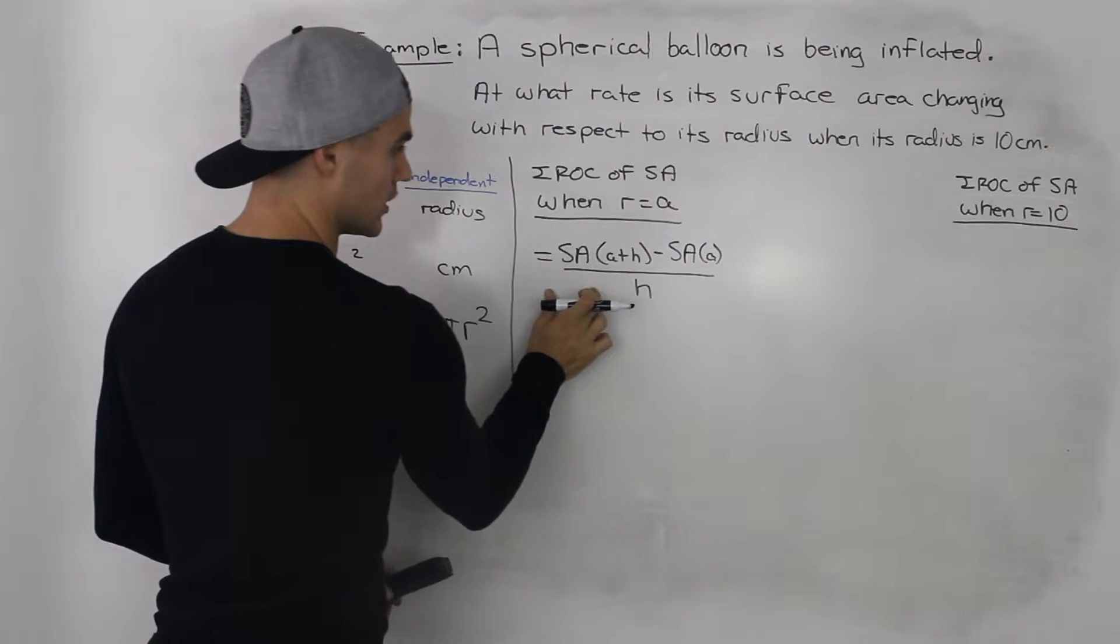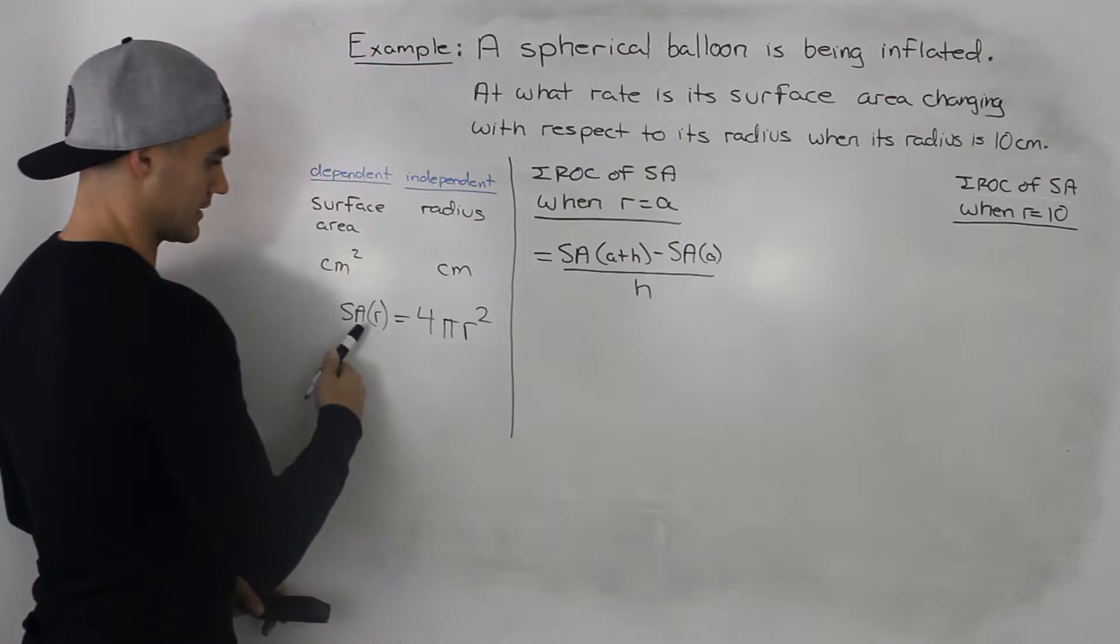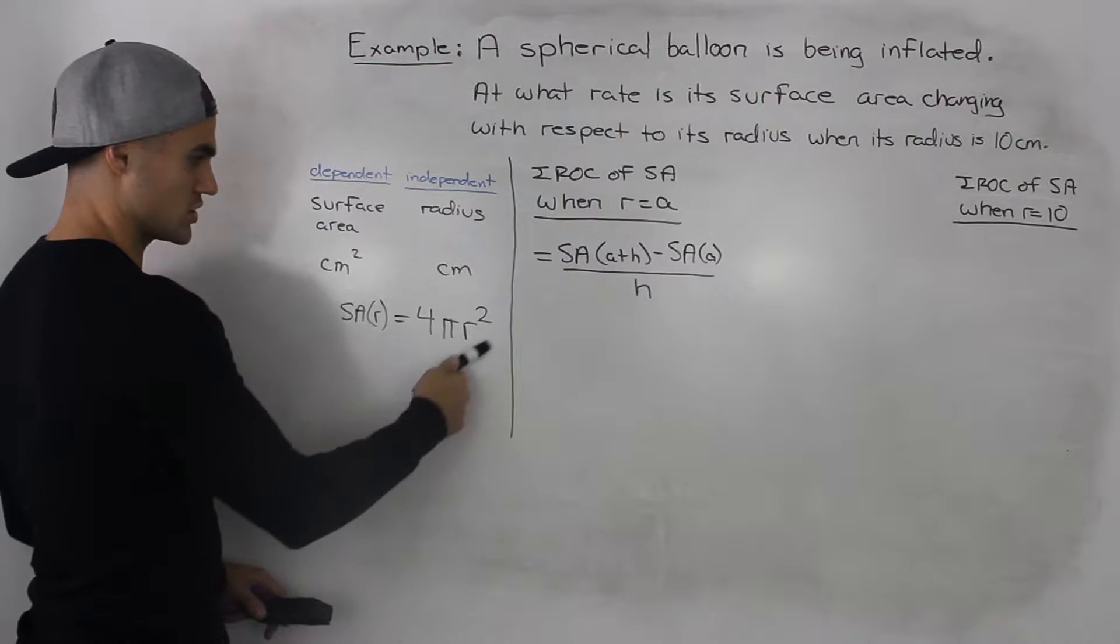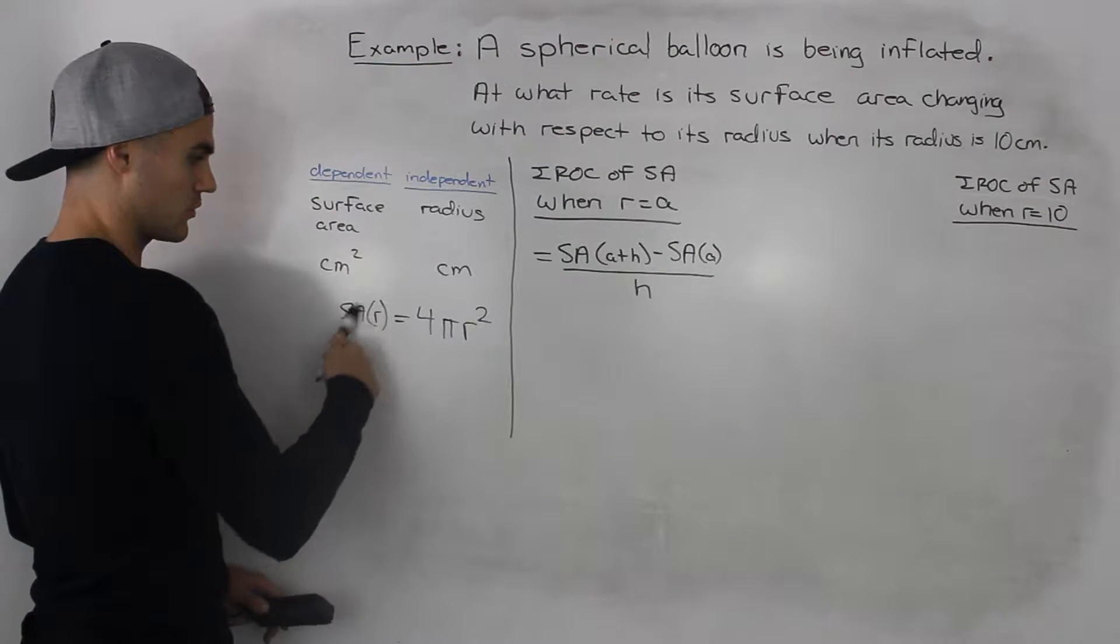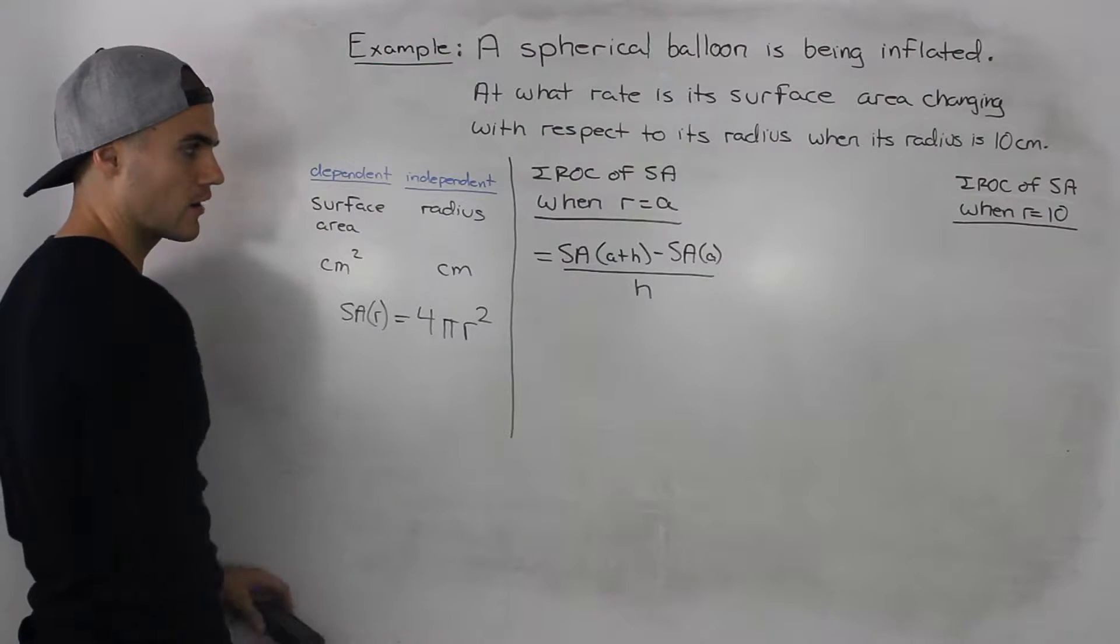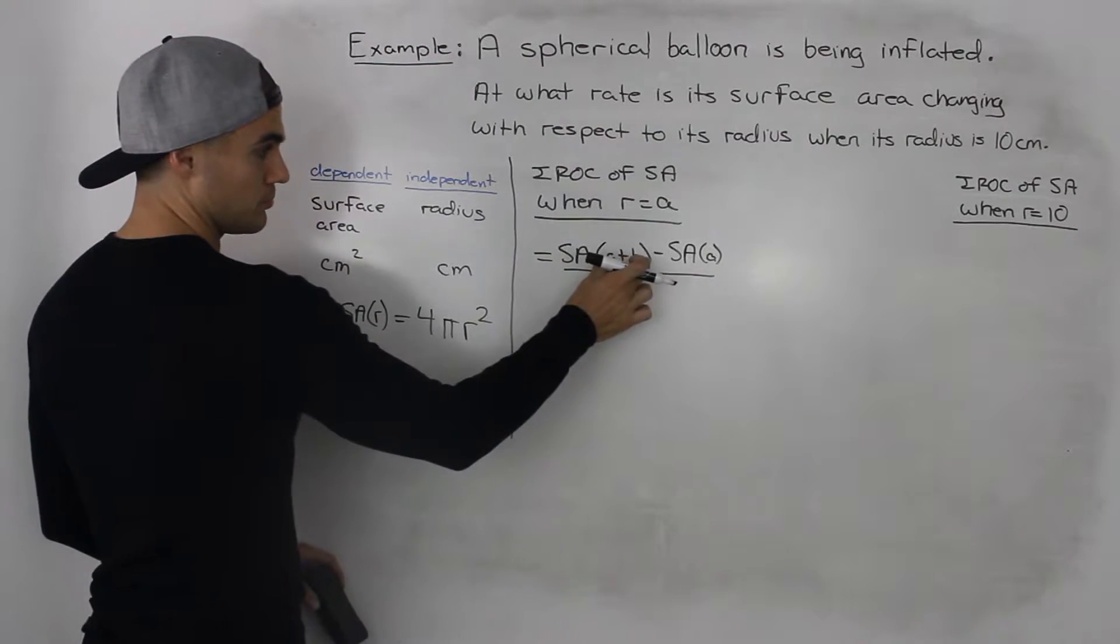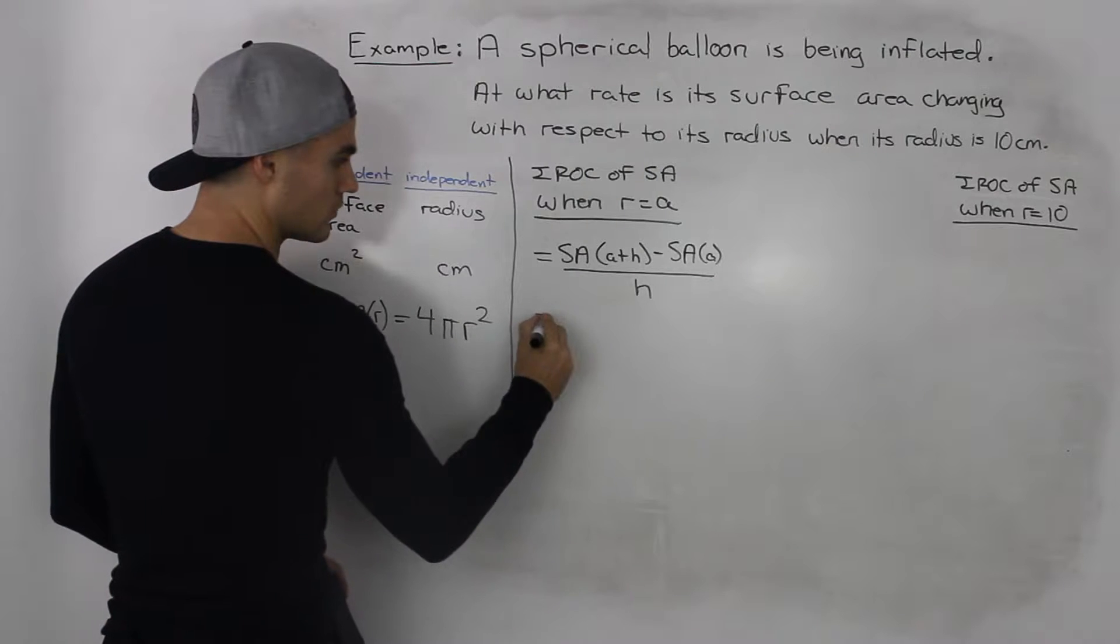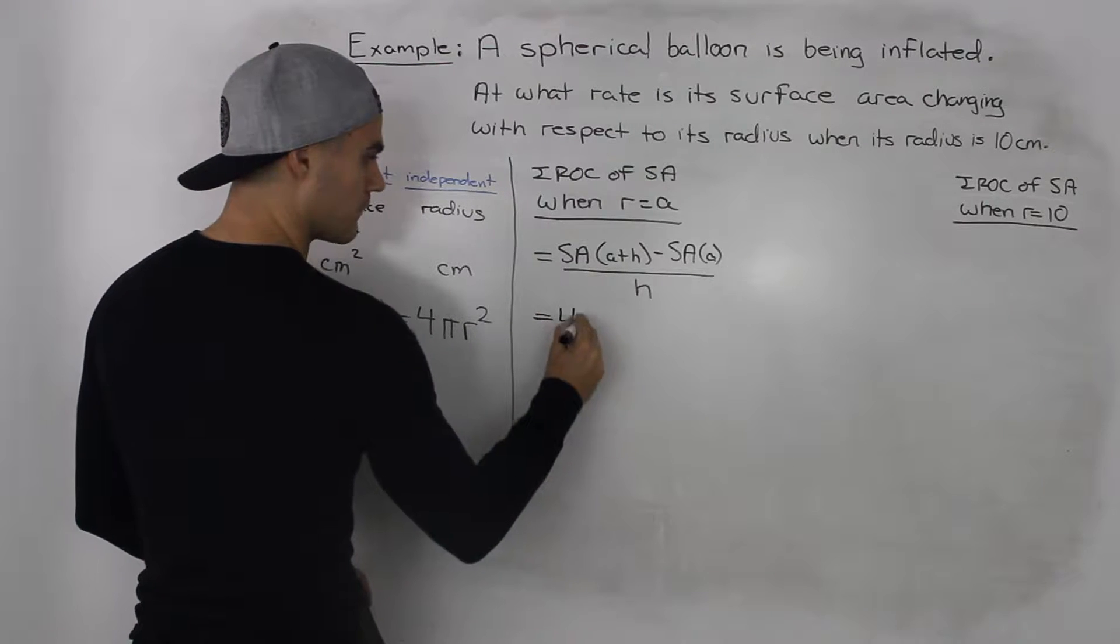So to do that we would use the difference quotient and we're going to use this equation that we made here. So the surface area with respect to r is equal to 4πr². So plugging in a plus h for r we would end up with 4π...